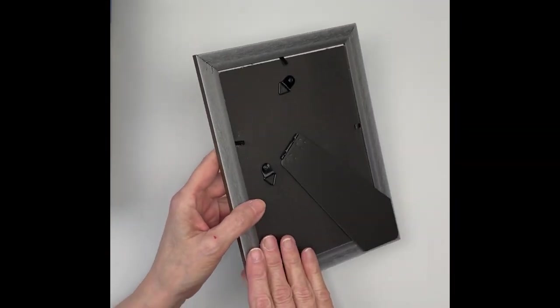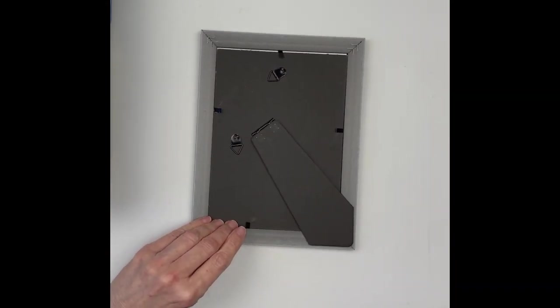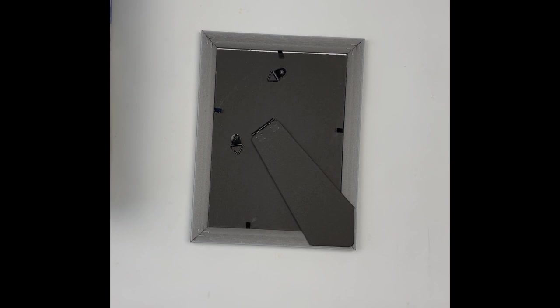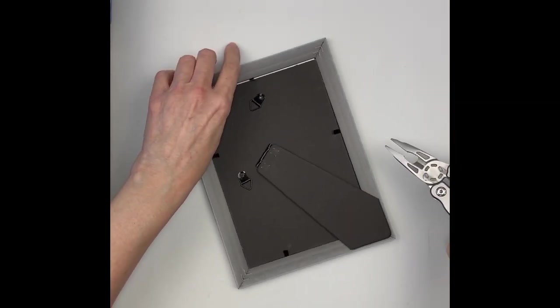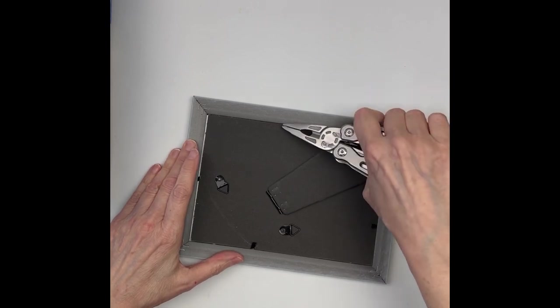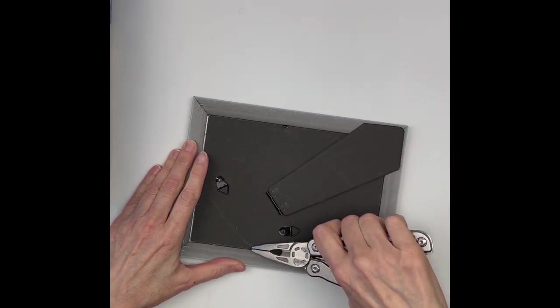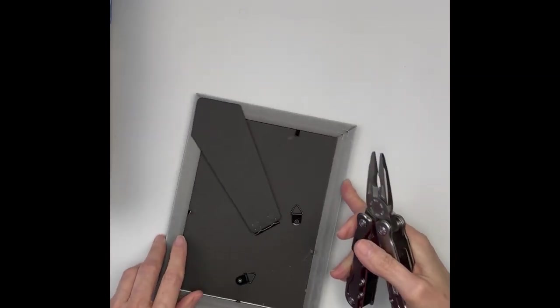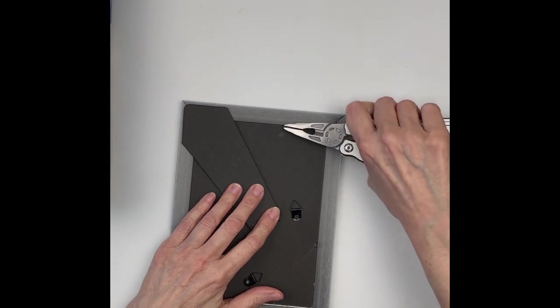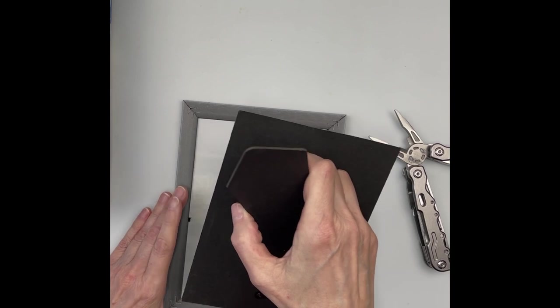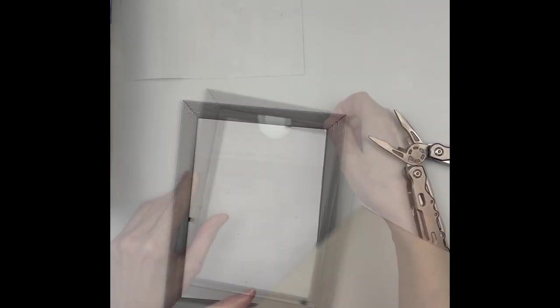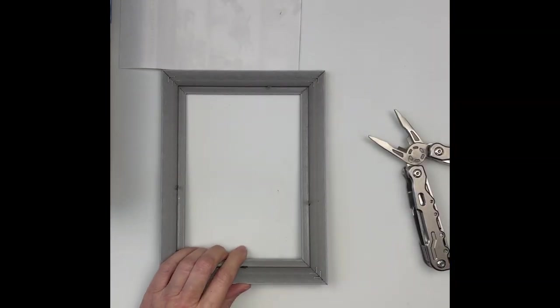This is a 5x7 frame that I purchased at Dollar Tree. I chose this one because it had a really flat frame going all the way around. Here I'm bending up the little tabs that hold the back in. Actually, it's best to just take them out. And we're going to remove the back and the glass. And then we're going to paint this.